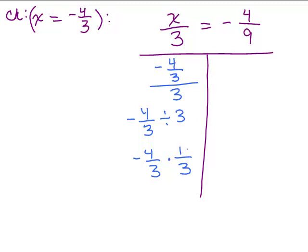Remember, when you divide by a number, you have to write it times reciprocal. And now if we multiply across, I get negative 4 9ths. So the left-hand side is negative 4 9ths. The right-hand side is negative 4 9ths, and so it checks.